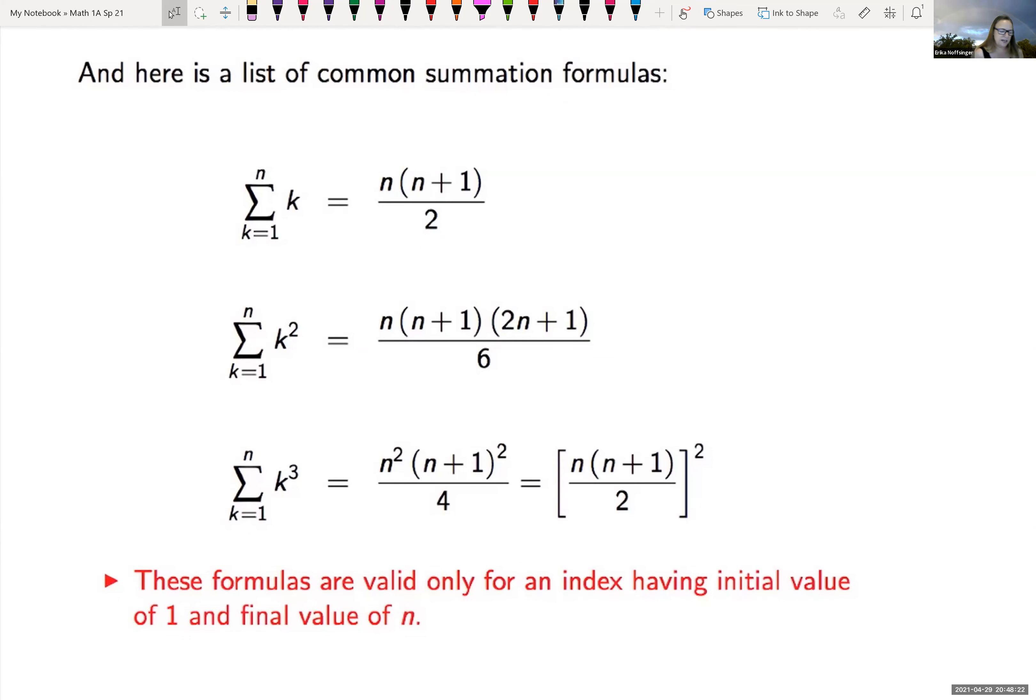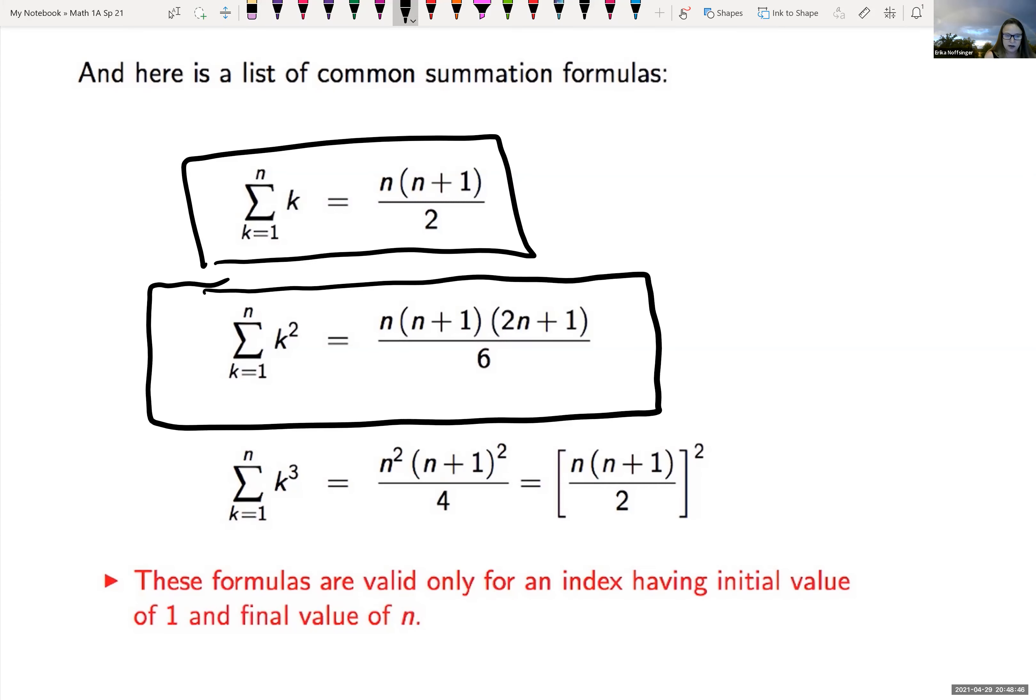So if you just have a summation from K equals one to N of just K. You can find out what the sum of all those terms are by looking at N times the quantity N plus one, and that's all divided by two. If we're looking at the summation K equals one to N of K squared, we can find that by N times the quantity N plus one times the quantity two N plus one, and that's all divided by six.